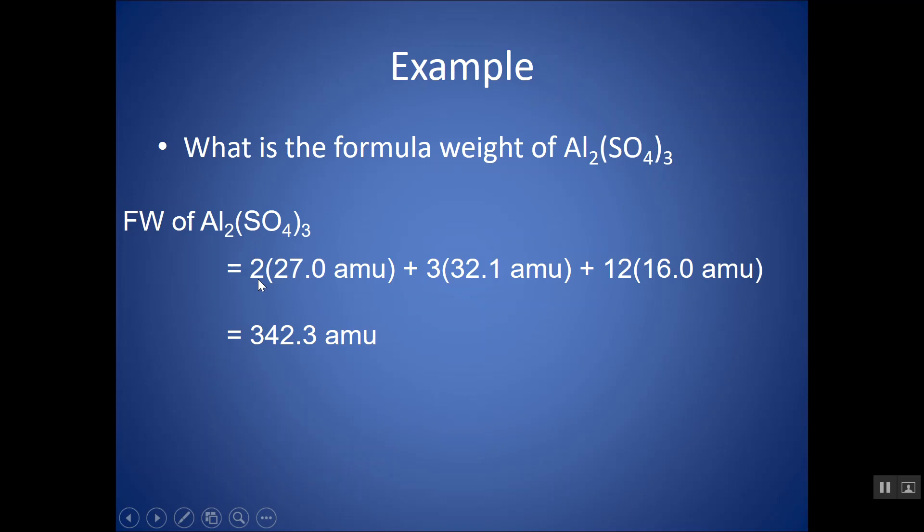There's two aluminums and they each weigh 27 AMUs. There are three sulfurs. Notice if you have a polyatomic ion or something in parentheses, you want to make sure that that outside subscript applies to it. You're distributing that subscript. There's three sulfurs that each weigh 32.1.